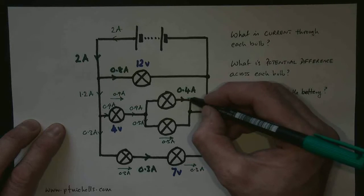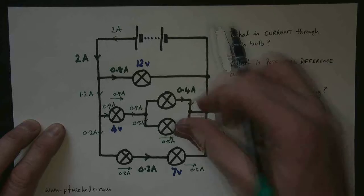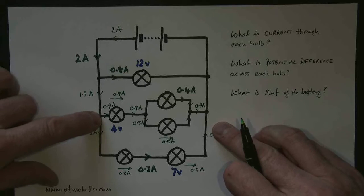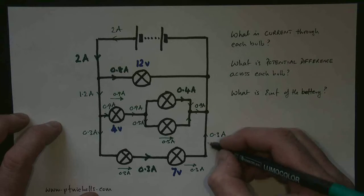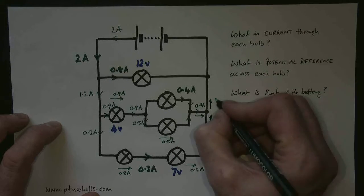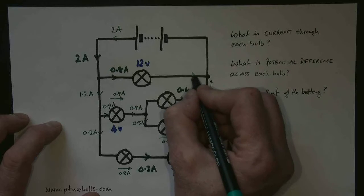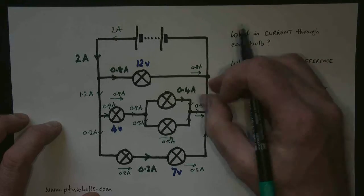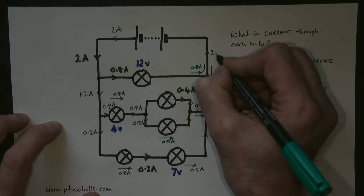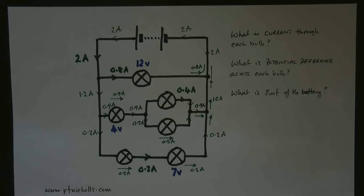Coming back to the next junction, the 0.4 and the 0.5 come together — two currents flowing in — so they must flow out that way, adding back up to 0.9 amps. The 0.3 coming up here, combining with the 0.9 going that way, must all continue, making 1.2 amps. That 1.2 amps, along with the 0.8 coming the other way, must come together, so the total current flowing back is 2 amps — 2 amps back into the battery. We've worked out all of the currents through every component in the circuit.